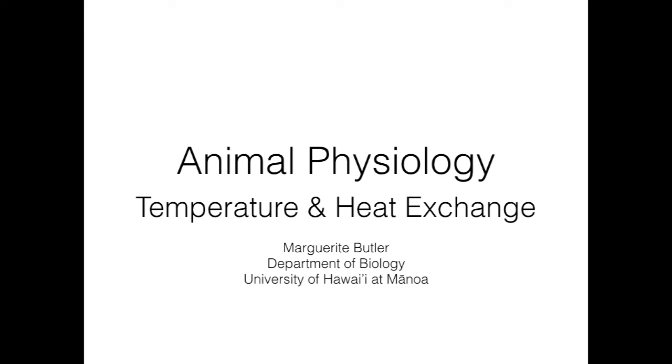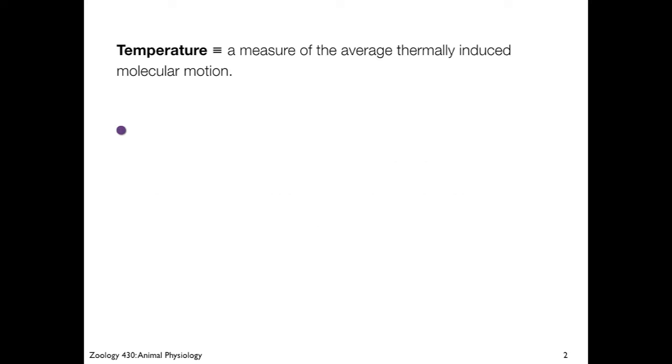Welcome back to Animal Physiology. Today we're talking about heat and temperature. So what is temperature anyway? It is a measure of the average thermally induced molecular motion. So here if we have our particle out in the universe, it is going to jump around because it has heat energy that's going to increase its random movements out in the world.